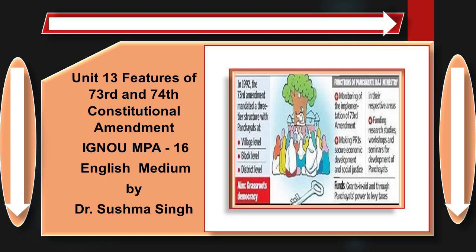Efforts to establish suitable planning machinery at the local levels have been half-hearted. The effective decentralization in planning in India existed at the state level, and planning at the state level seems to depend very much on the size of the state. The planning machinery at the district level was weak both in terms of technical expertise and financial resources, and there was virtually no coordinating agency.